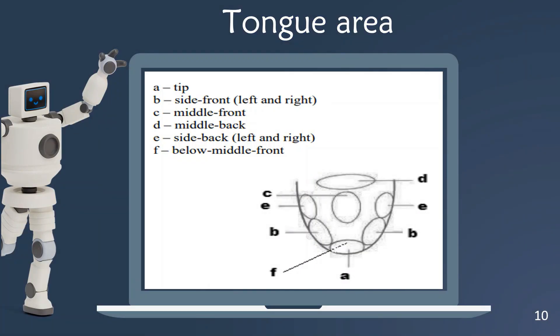There are several tongue areas needed to be touched by the cotton bud. The first area is the tip of your tongue, labeled A. Then the side front left and right of your tongue, labeled B. Next, the middle front of your tongue, labeled C.